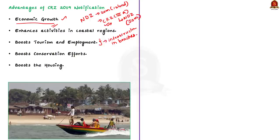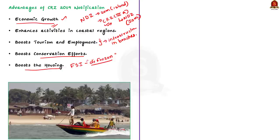The third advantage is it will boost conservation efforts — the 2019 notification is expected to rejuvenate coastal areas while reducing vulnerabilities of coastal communities. The fourth advantage is it will boost housing in coastal areas. Since the 2019 notification defreezes the floor space index norms, this will result in the creation of additional housing along the coast, mostly in the form of affordable housing, addressing the crunch in the housing sector.